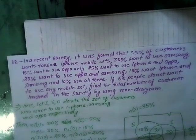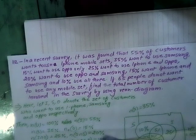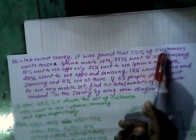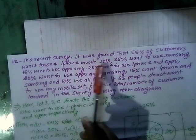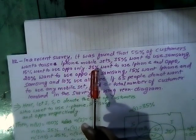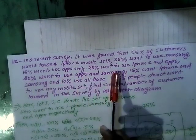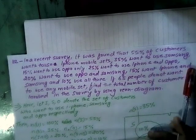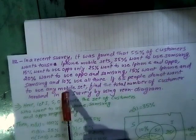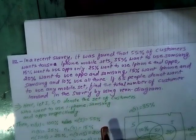Here, question number 112. In a recent survey it was found that 55% of customers want to use iPhone, 35% want to use Samsung, 15% want to use Oppo only, 25% want to use iPhone and Oppo, 20% want to use Oppo and Samsung, 15% want iPhone and Samsung, and 10% use all three. If 65 people do not want to use any mobile set, find the total number of customers involved in the survey using a Venn diagram.